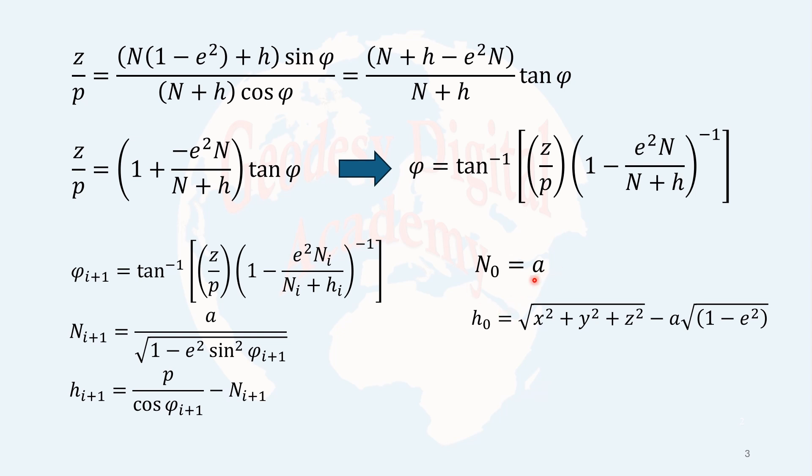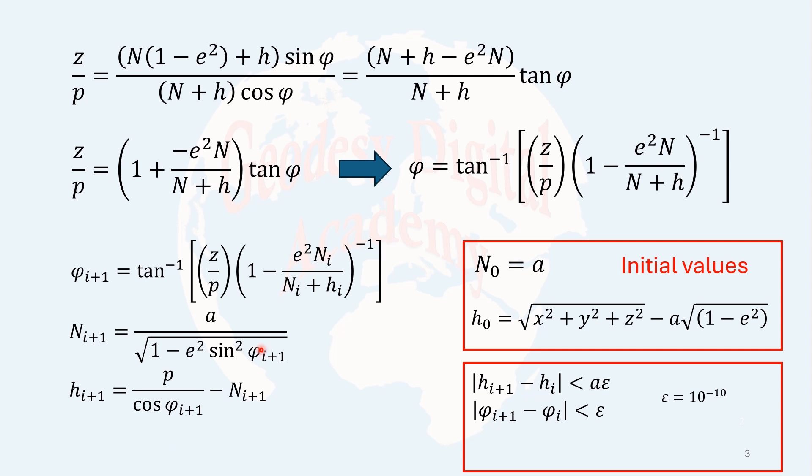Normally, we consider n0 or the zero iteration or initial value for n as a. A is the semi-major axis of the ellipsoid. And h0 can be approximated by this formula. We have the Cartesian coordinates. We have a from the ellipsoid. It's the semi-major axis of the ellipsoid. And e is the first eccentricity. And in that case, you can initialize the process. You put n0 as a and h0 here instead of h. And you get a new phi. New phi sits here. You get new n. And both n and phi sits here to get h. And again, this process is repeated. This part for initial values. And it is repeated until we have these conditions.